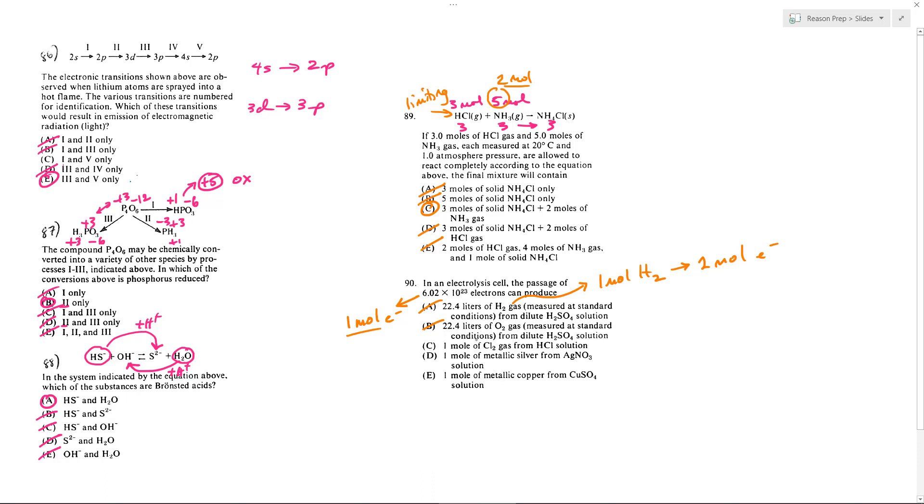Same thing with C. 1 mole of Cl2. 2 moles of electrons are going to be involved in reducing Cl to Cl-. You're going to have 2 Cls per mole, and so you'll need 2 moles of electrons. So that's out.